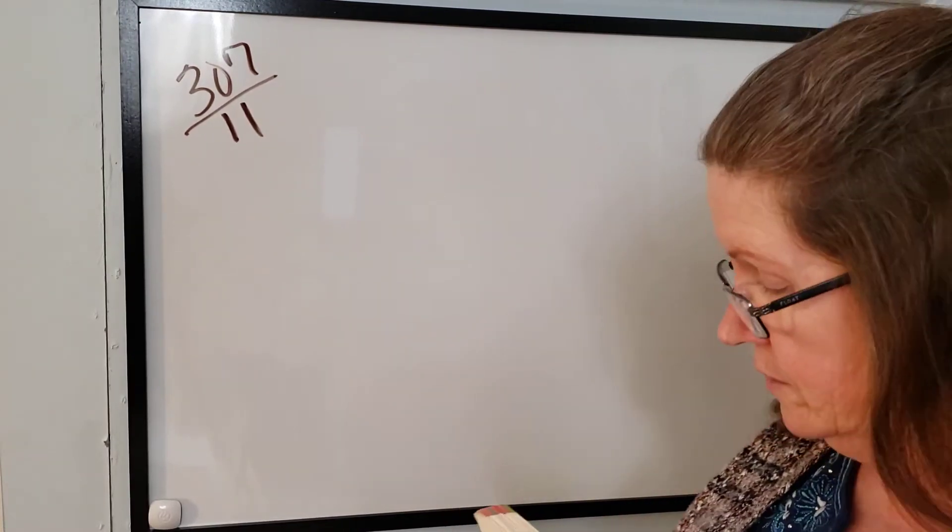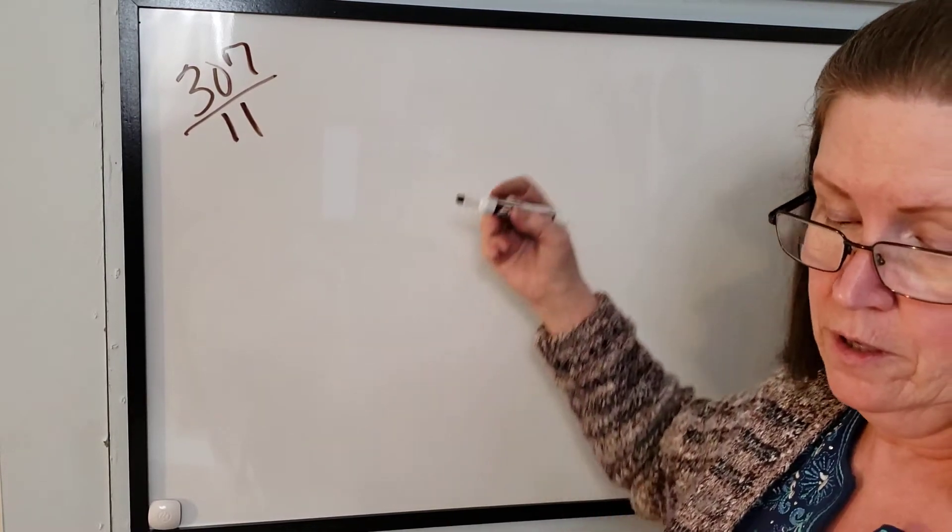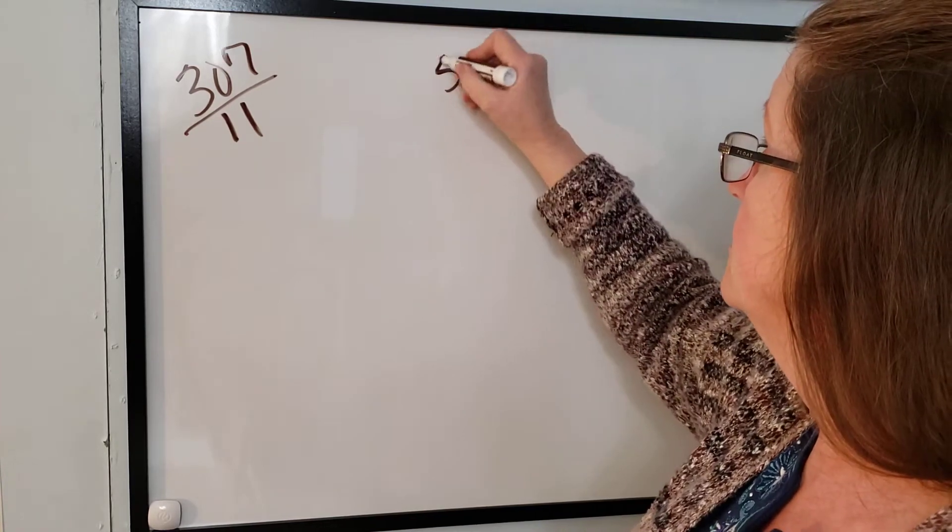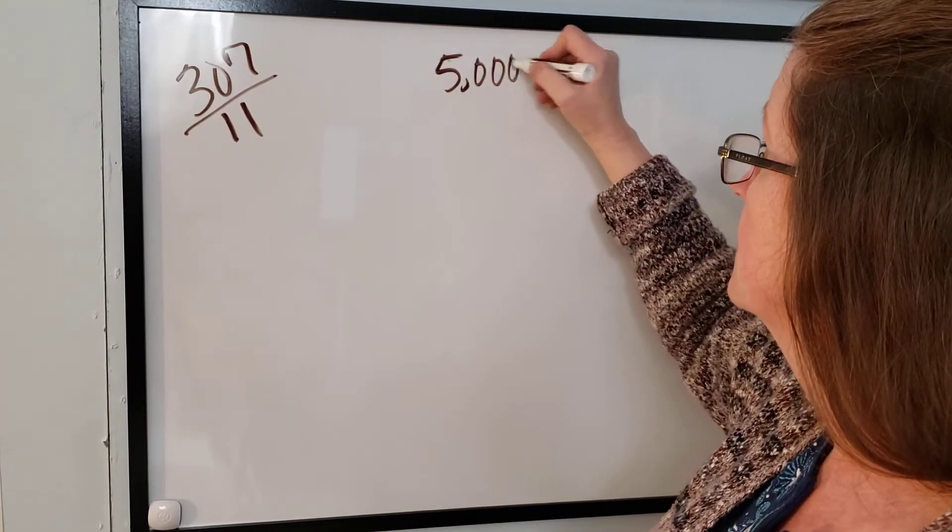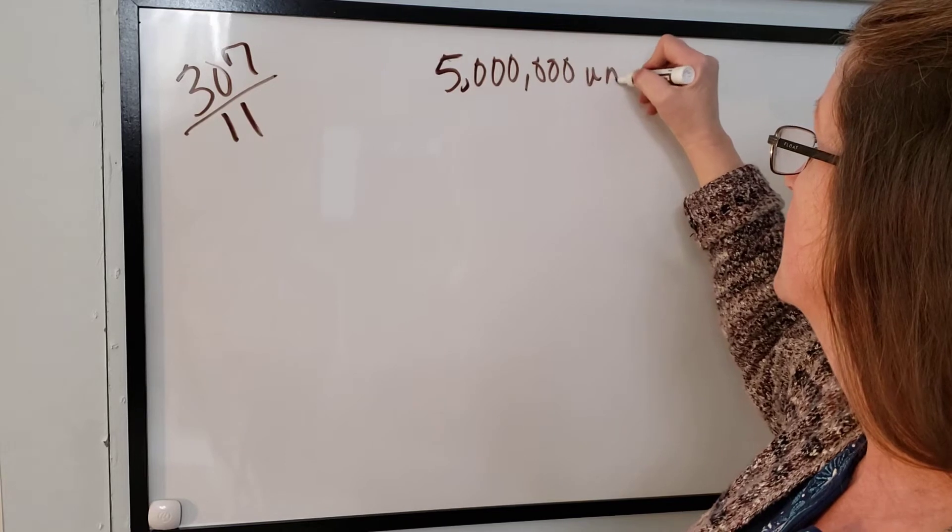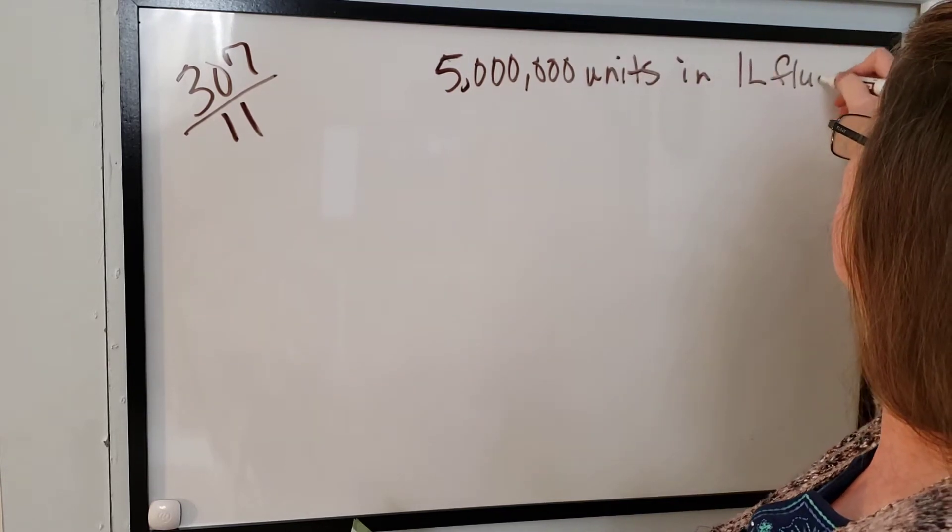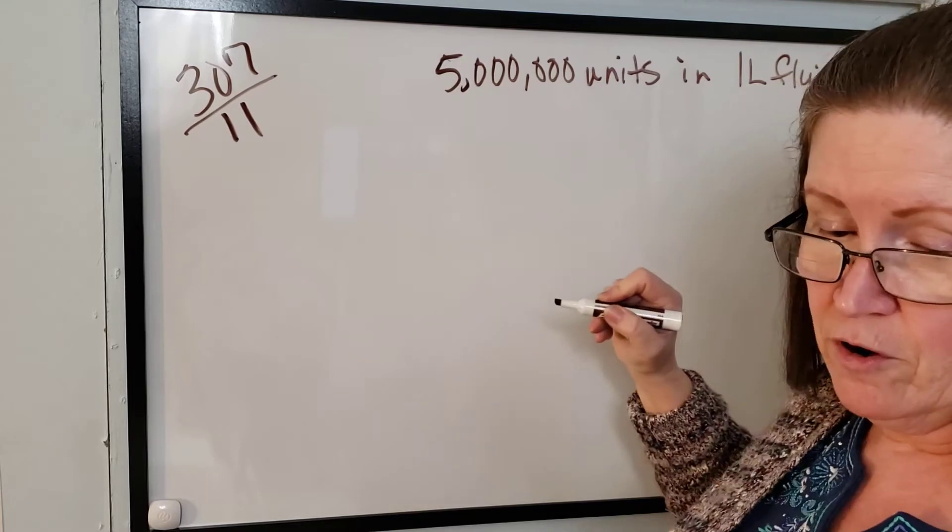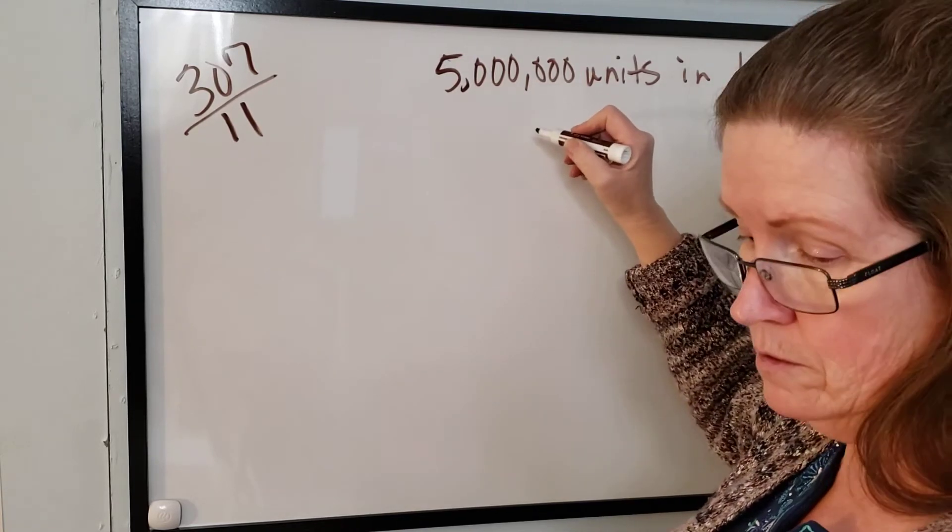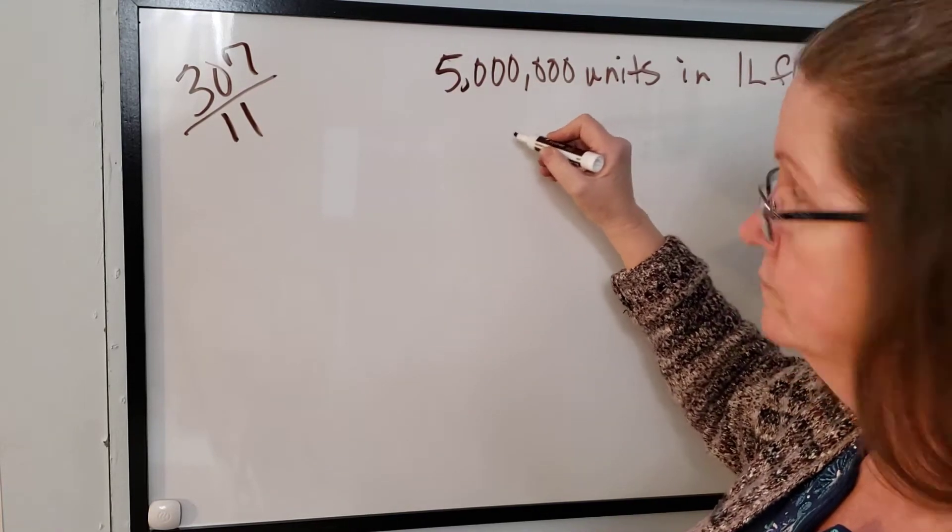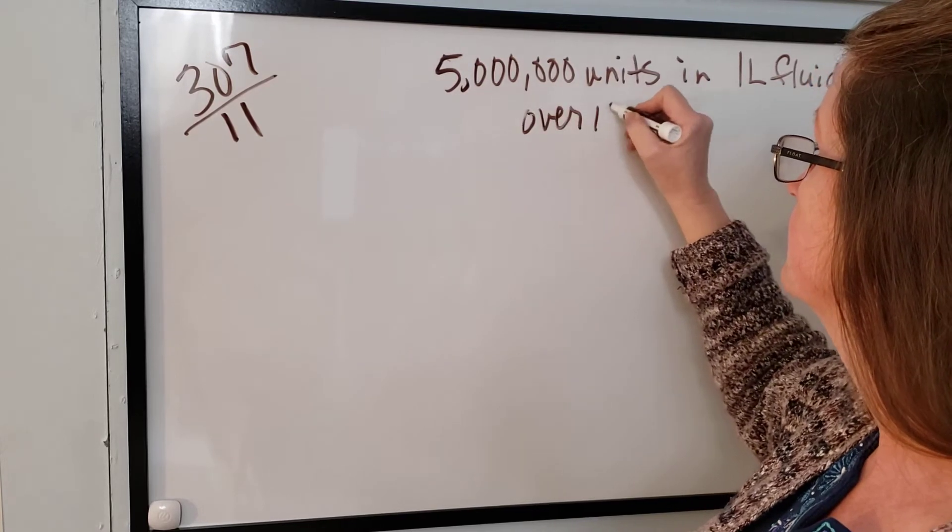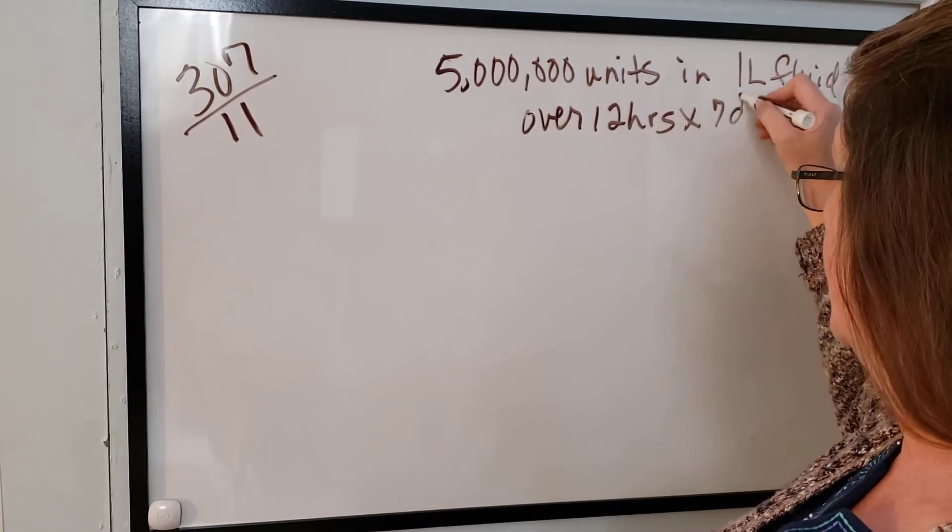The vial has been reconstituted with 11.5 milliliters of diluent. Okay, so let's look at our pieces of information. 5 million units in 1 liter of fluid to be given over 12 hours.